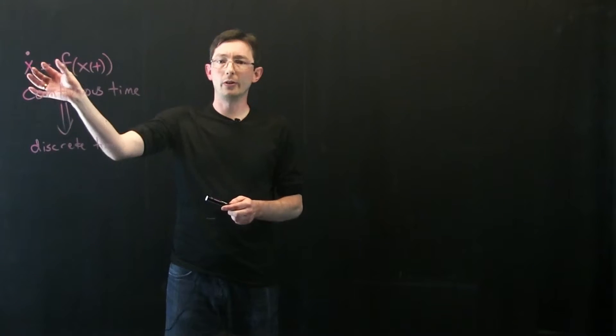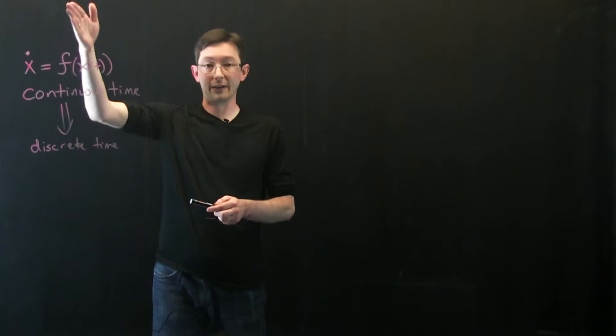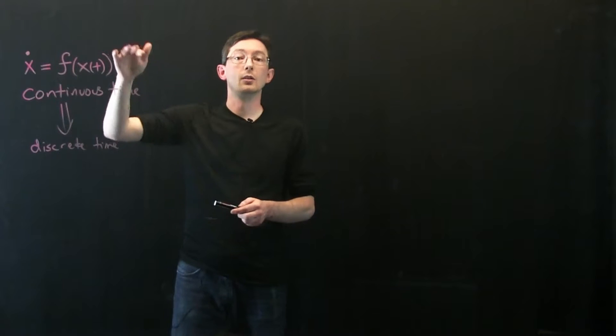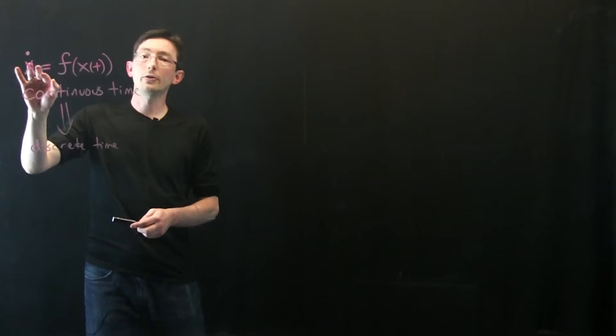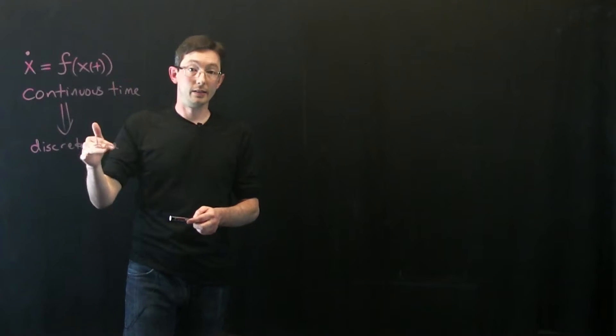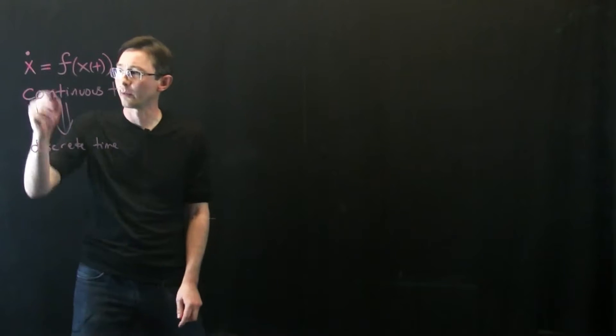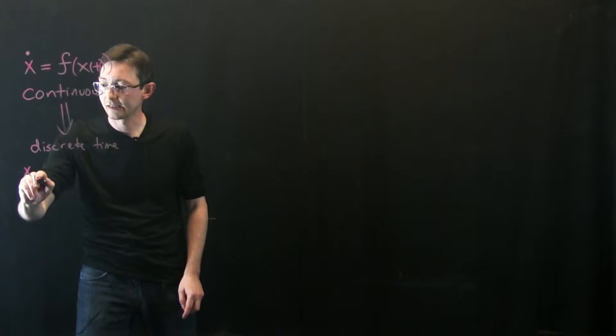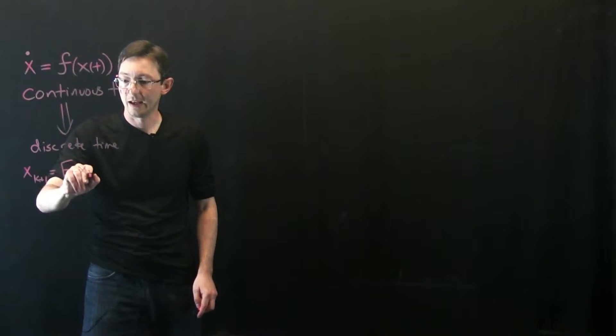When I write this x, I'm going to assume that this is possibly a vector of states, and so this f would be a vector-valued function with as many outputs as there are elements of x. And so for every continuous differential equation, you can define a discrete time differential equation or dynamical system corresponding to this. So what we're going to say is x at k plus 1 equals big F at x at time k.